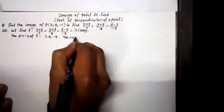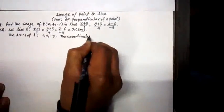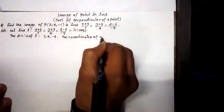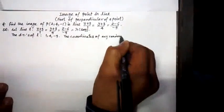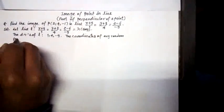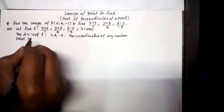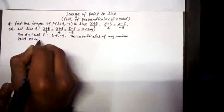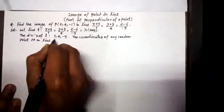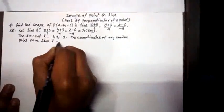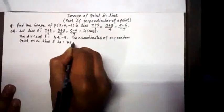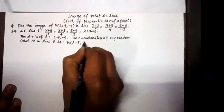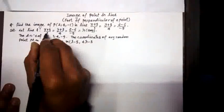Also, the coordinates of any random point, say M on line L, is M(λ-5, 4λ-3, -9λ+6).